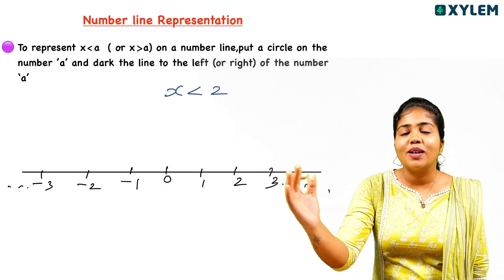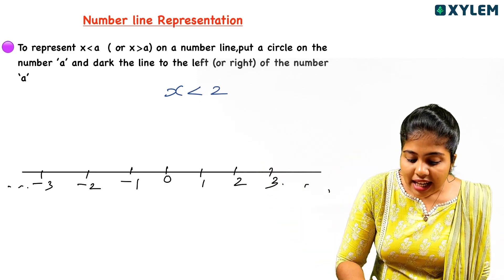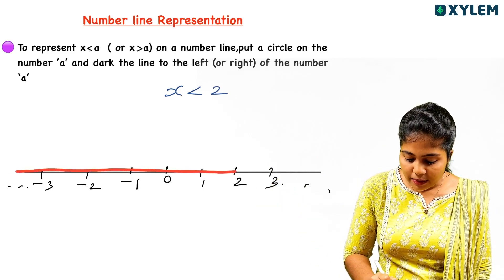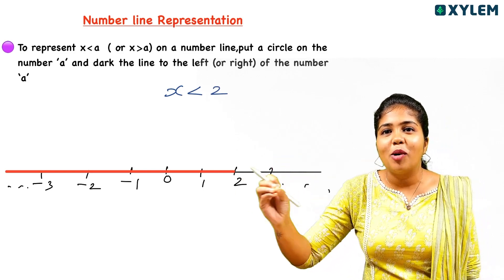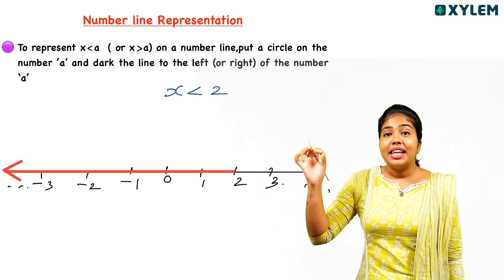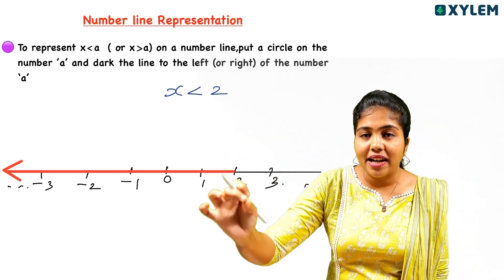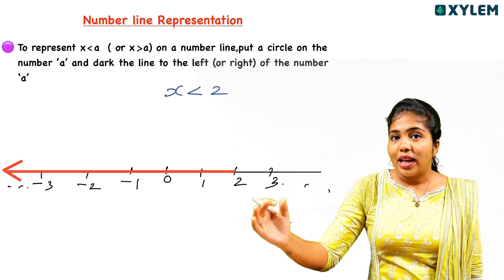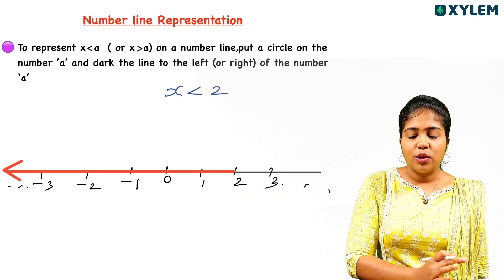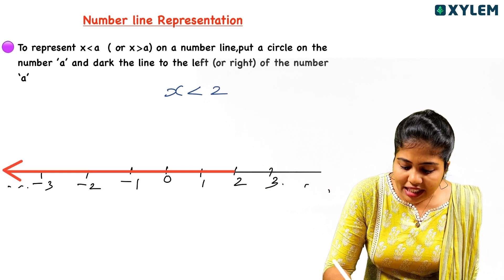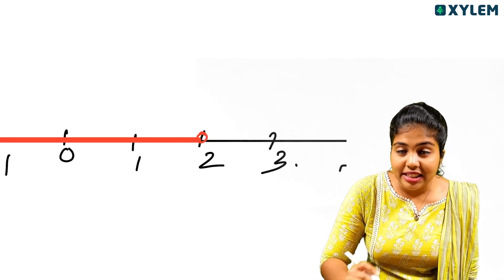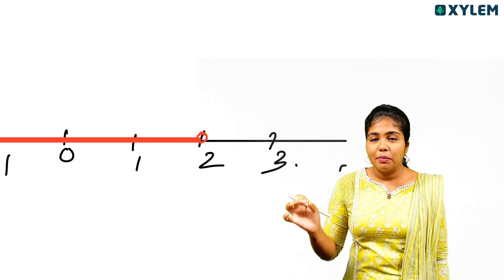Now x is less than 2. We go to the left side and make an arrow mark. For x less than 2, we place an open circle at 2 and draw an arrow to the left side. That represents all values less than 2.